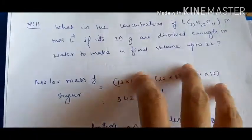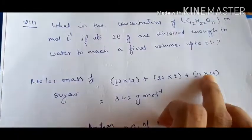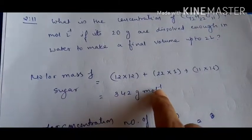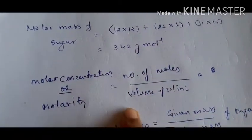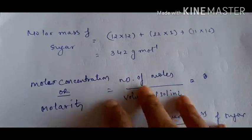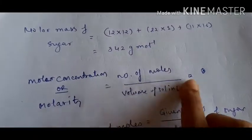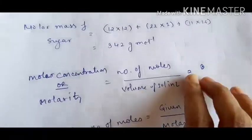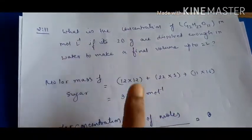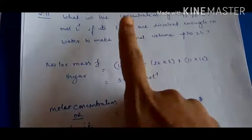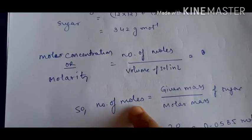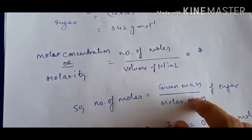The molar mass of sugar (C₁₂H₂₂O₁₁): carbon contributes 12 × 12 = 144, hydrogen contributes 22 × 1 = 22, and oxygen contributes 11 × 16 = 176. Total molar mass of sugar is 342 gram per mole. Molar concentration (molarity) = number of moles divided by volume of solution in litres.